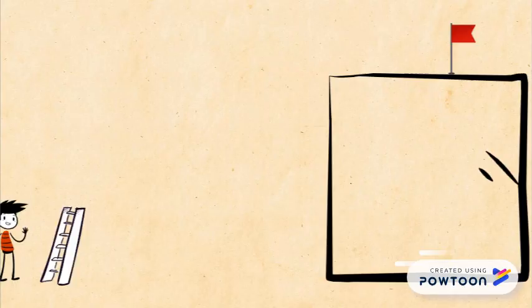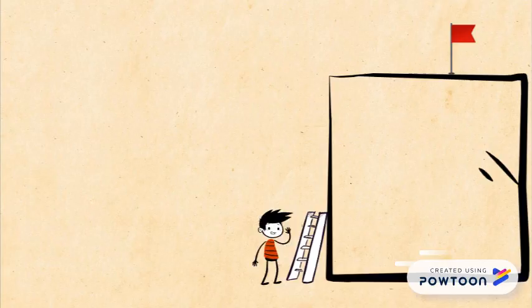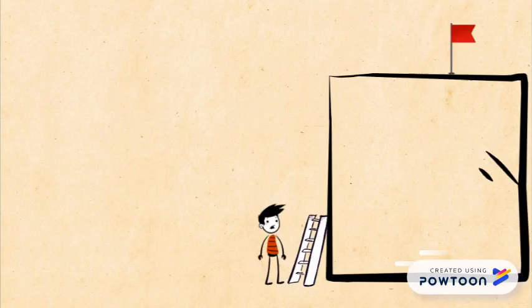This is Charlie, and represented by his ladder is what Charlie already has, his existing knowledge. And what he's trying to do is climb the wall.